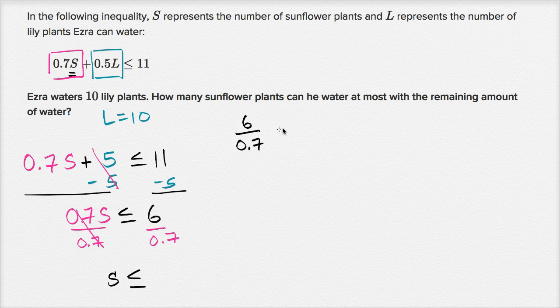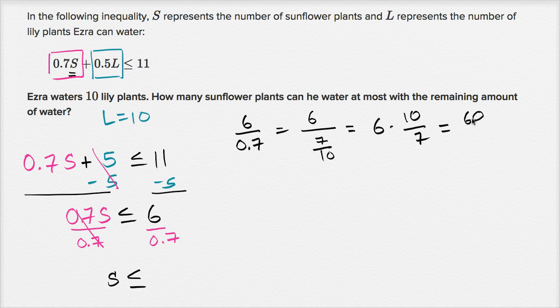Let me write everything as a fraction. This is the same thing as 6 divided by 7 tenths, which is equal to 6 times 10 over 7, which is equal to 60 sevenths, which is equal to 8 and 4 sevenths. So S has to be less than 8 and 4 sevenths.